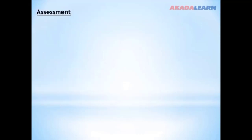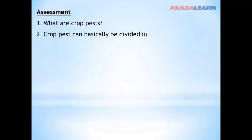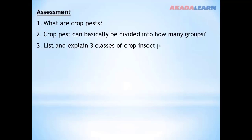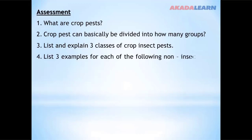Assessment: What are crop pests? Crop pests can basically be divided into how many groups? List and explain three classes of crop pests based on their mouth parts. List three examples for each of the following non-insect pests of crops: number one, mammals; number two, birds. If you are unable to answer this assessment, go over the video again and you will find it very easy to answer.